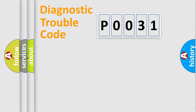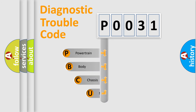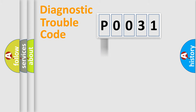First, let's look at the history of diagnostic fault code composition according to the OBD2 protocol, which is unified for all automakers since 2000. We divide the electric system of the automobile into four basic units: Powertrain, Body, Chassis, and Network. This distribution is defined in the first character of the code.